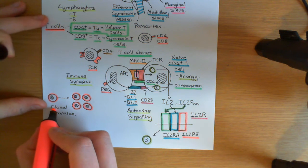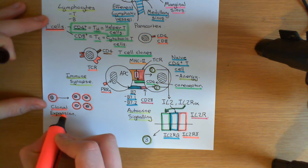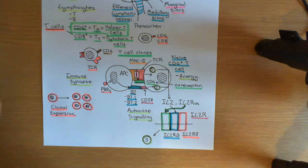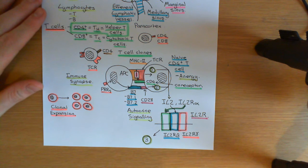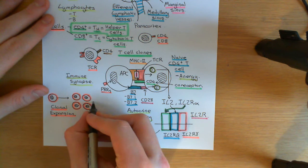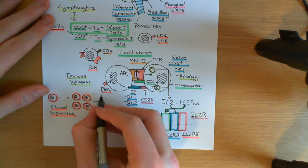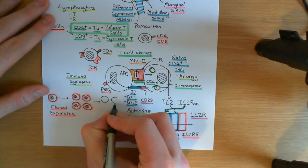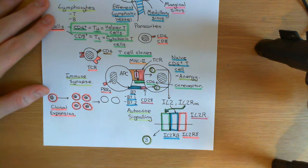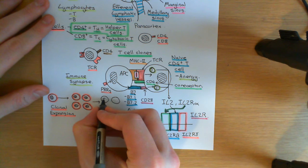Clonal expansion is the first thing that's going to happen. Then what's going to happen is the CD4-positive T-cells are now going to start differentiating into one of two options. They can either differentiate into memory CD4-positive T-cells, or they can differentiate into effector CD4-positive T-cells. We could also call these memory helper T-cells and effector helper T-cells. CD4-positive and T-helper are utterly interchangeable — they mean the same thing.